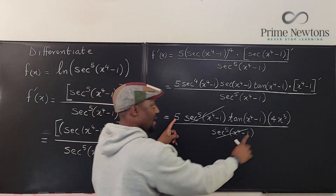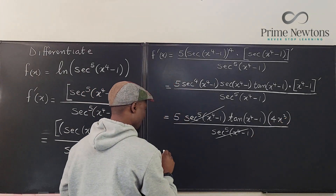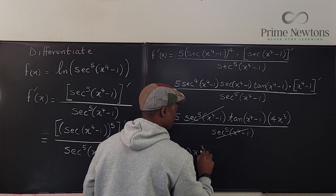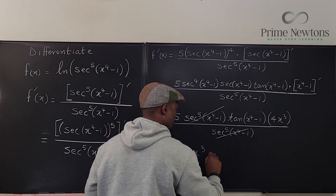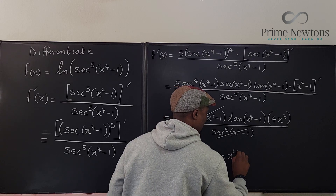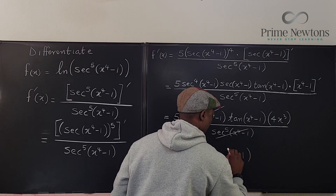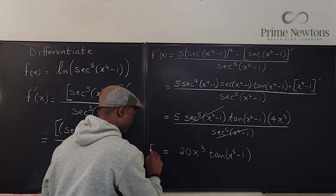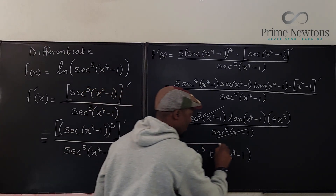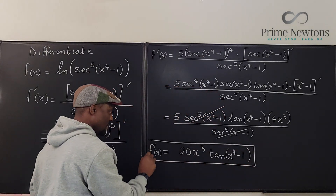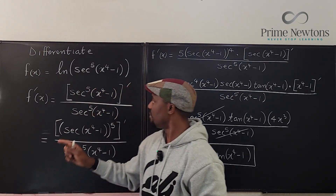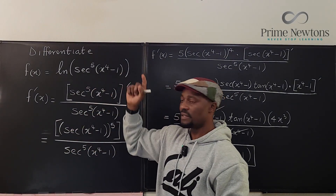After cancellation, I have 5 left here and 4x³ here — so that gives me 20x³, and I have tan(x⁴ - 1). That is f prime of x. There is no other differentiation to be done, and this is the derivative of this function.